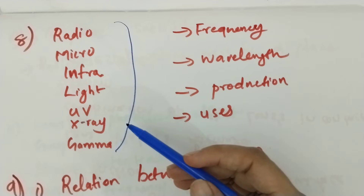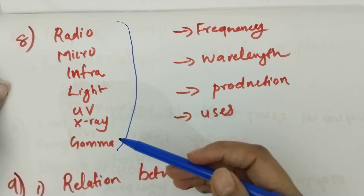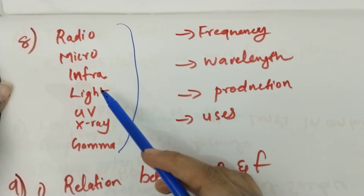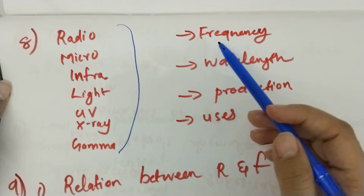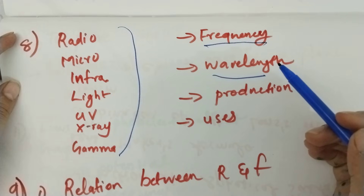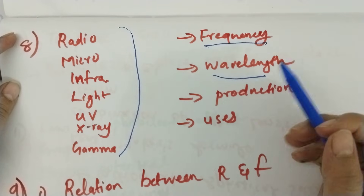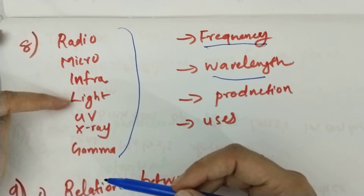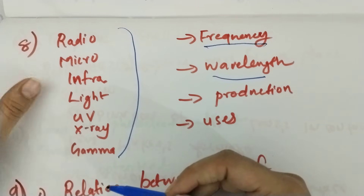This is the electromagnetic spectrum: radio wave, microwave, infrared, light wave — frequency, wavelength, order. Let's see how the order is correct.